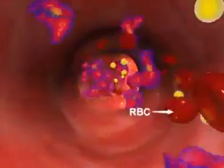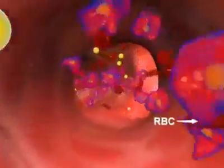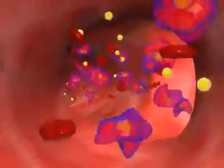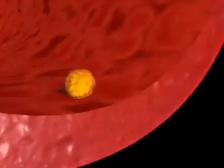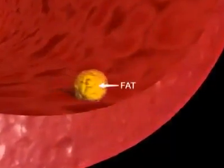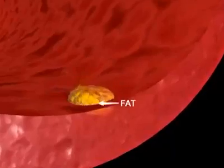Coronary arteries are the blood vessels which supply the heart with oxygen and nutrition. Over time, the inside of these arteries develop fibro-fatty plaques of different sizes.